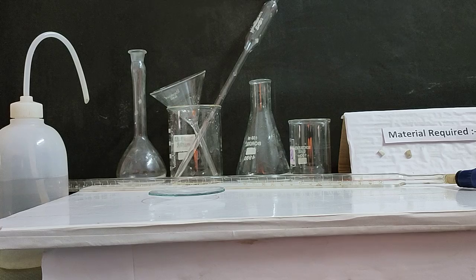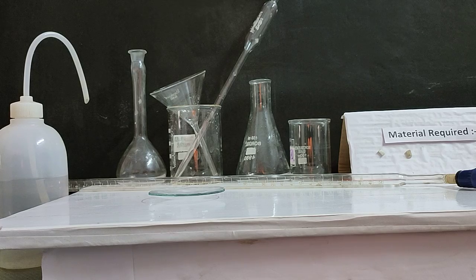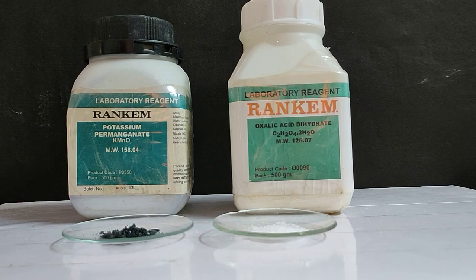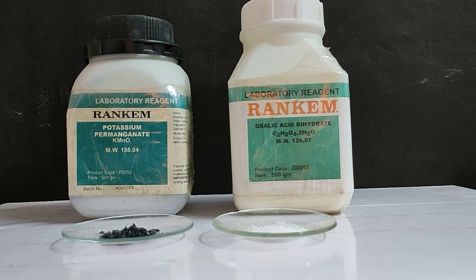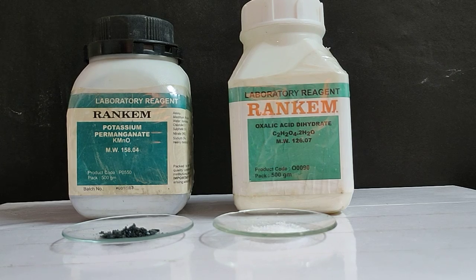Identify the other materials. Potassium permanganate: violet in color. Oxalic acid: colorless.